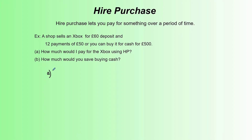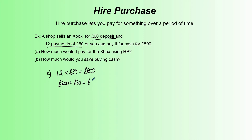Let's have a go at this without a calculator. Most times when paying using hire purchase you will have to pay a deposit as your first payment on the day you buy the item. Here our deposit is £60, and then we've got 12 payments of £50. We'll deal with the payments first: 12 payments of £50 is £600. Then we add in the £60 deposit, which gives us £660.